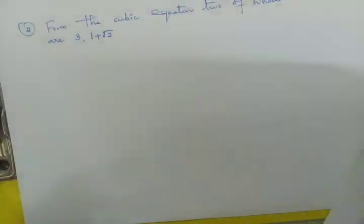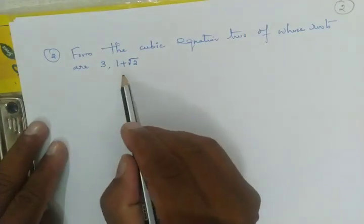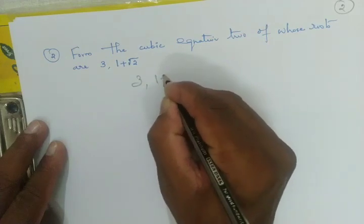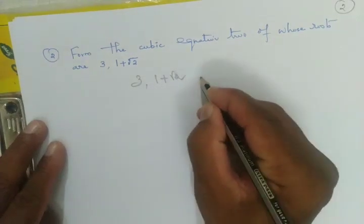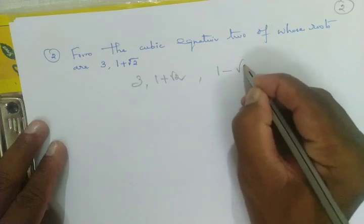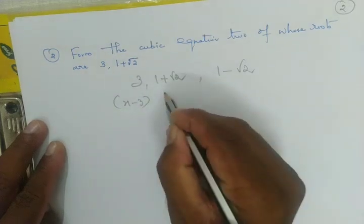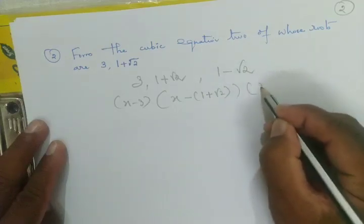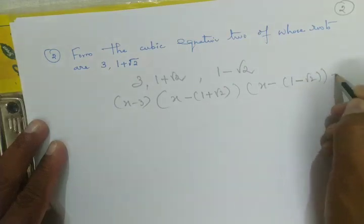Continuing with another problem. Now we are given: form the cubic equation where 2 of those roots are 3 and 1+√2. Since 1+√2 is irrational, by the conjugate root theorem the third root is 1-√2. So we write: x-3, x-(1+√2), x-(1-√2) equal to 0.